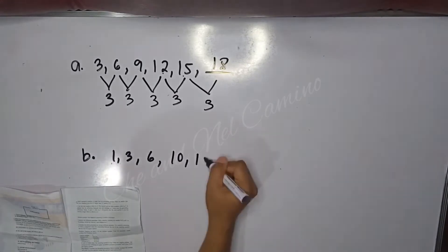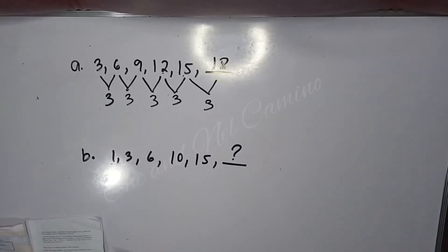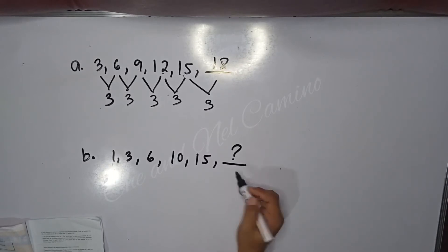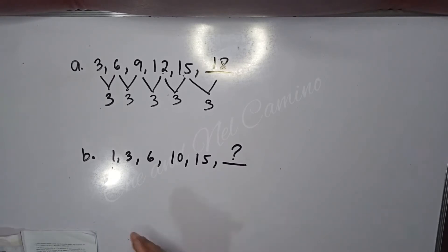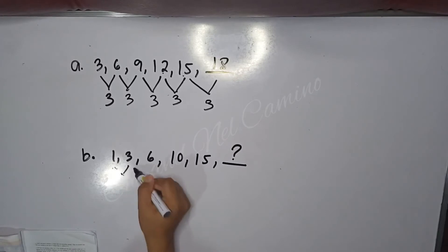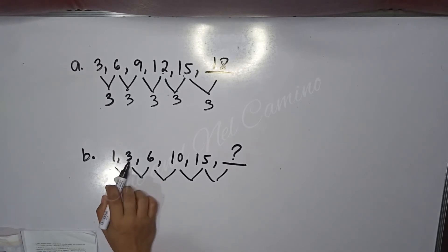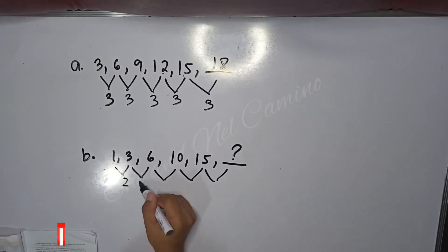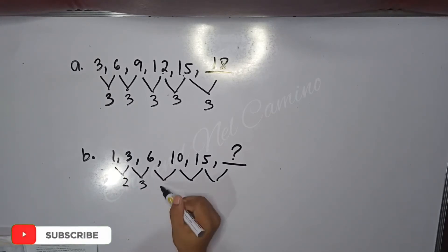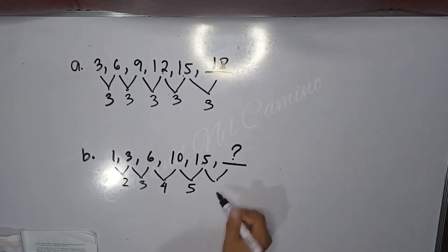We are going to fill in the blank and predict what comes next after 15. The difference between 1 and 3 is 2, between 3 and 6 is 3, between 6 and 10 is 4, and between 10 and 15 is 5. The difference between 15 and the blank is the question mark.